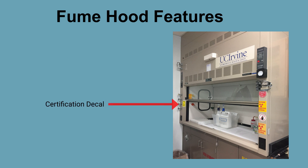The certification decal affixed to the front of the fume hood provides information on the performance testing that was conducted. The decal shows the average face velocity measured on the date of the test, the test date, the name of the inspector, and the due date for the retest. Fume hoods that do not pass the performance test will not have the average face velocity noted; instead, the word 'fail' will be written in that field.